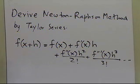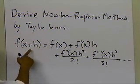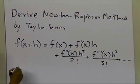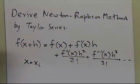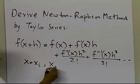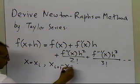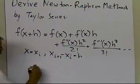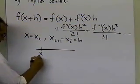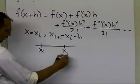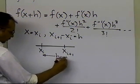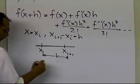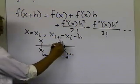Now, what does this have to do with Newton-Raphson method? We can derive the Newton-Raphson formula using Taylor series. Let's suppose I put x equal to x_i, and say x_{i+1} minus x_i is equal to h. So I'm here at x_i and going to x_{i+1}, and this distance is h. In the formula, this is x and that's x plus h.